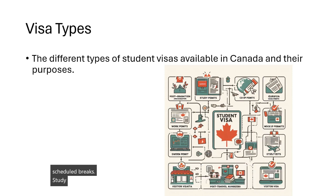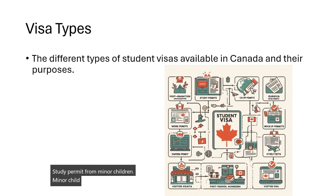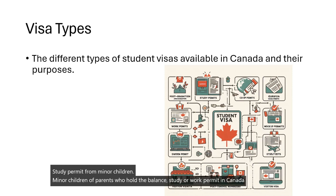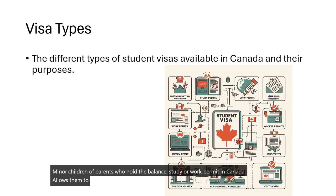Study Permit for Minor Children: This permit is for minor children of parents who hold a valid study or work permit in Canada. It allows them to attend primary or secondary school in Canada.